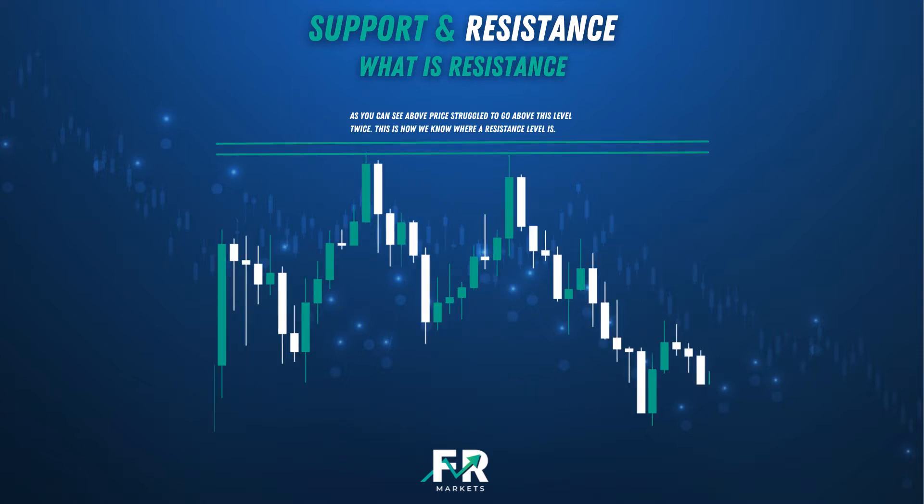What is resistance? Resistance is an area on the chart that price has risen to but struggled to break above. Resistance is the price level at which supply, or selling power, is strong enough to prevent the price from rising further. As you can see on the screen, price struggled to go above this level twice. This is how we know where a resistance level is.